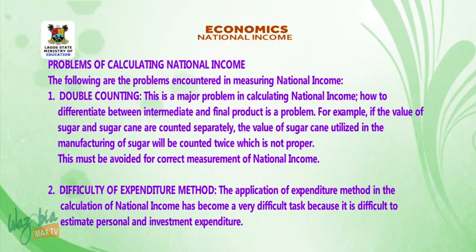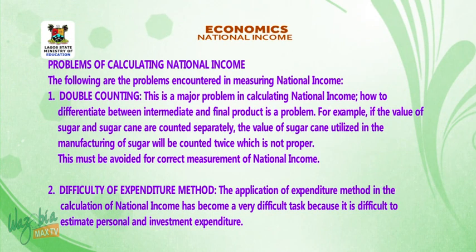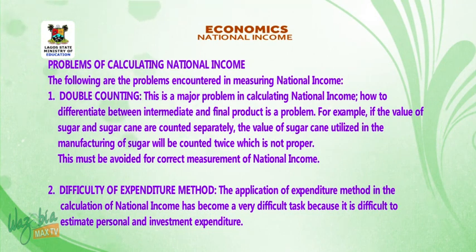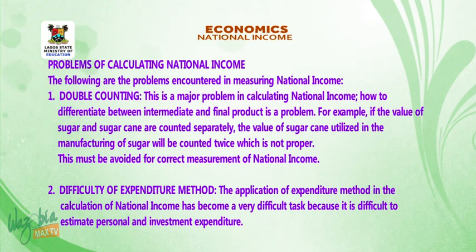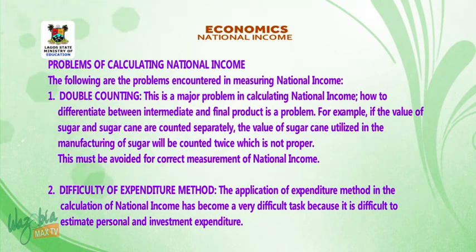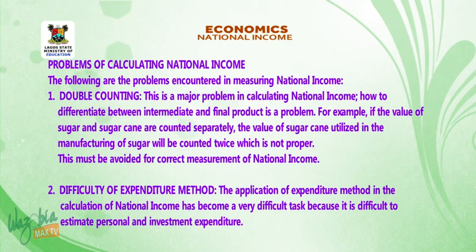Problems of calculating national income. The following are the problems encountered in measuring national income. 1. Double counting. This is a major problem in calculating national income. How to differentiate between intermediate and final products is a problem. For example, if the value of sugar and sugar cane are counted separately, the value of sugar cane utilized in the manufacturing of sugar will be counted twice, which is not proper.